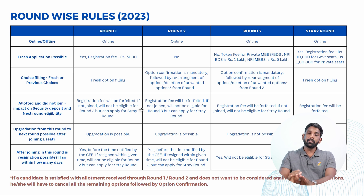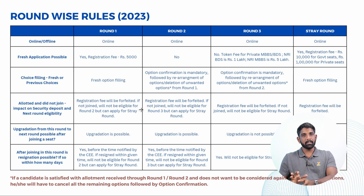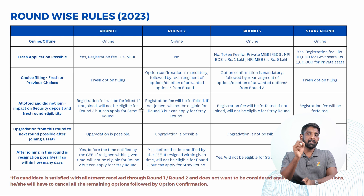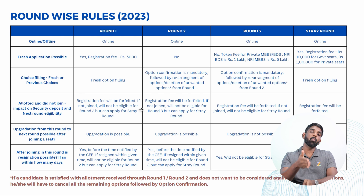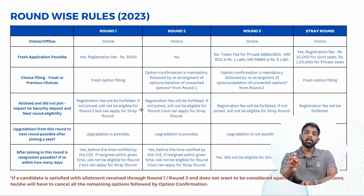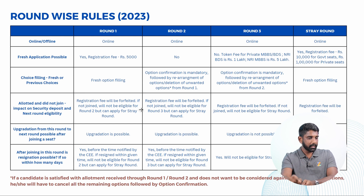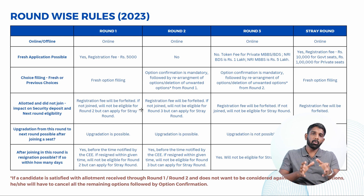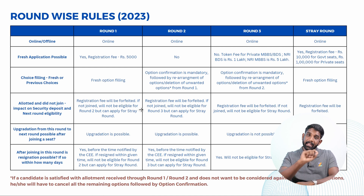In Round Two, there is no fresh choice filling — unlike All India, you cannot fill out fresh choices. Whatever choices you have already filled will be visible on the portal. You must log in and do option confirmation, which is mandatory in Round Two. If you don't do the option confirmation, whatever seat was allotted in Round One will be retained. You can also rearrange or delete preference options depending on your requirement.